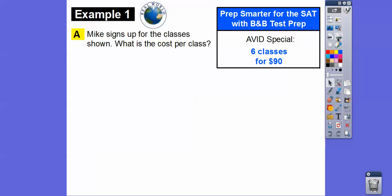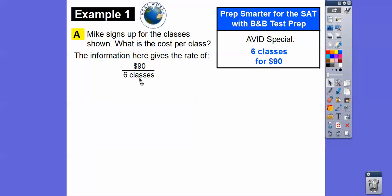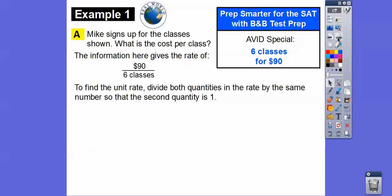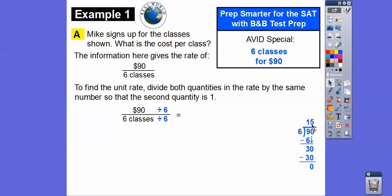Mike signs up for classes. There's a B&B Test Prep SAT class and a program called AVID, offering a special for six classes for $90. So the rate is $90 for six classes. To find the unit rate, we divide both quantities by the denominator to make it equal one — that's dividing by six. So 90 divided by 6 is 15, and 6 divided by 6 equals 1. Mike's SAT class costs $15 per class.